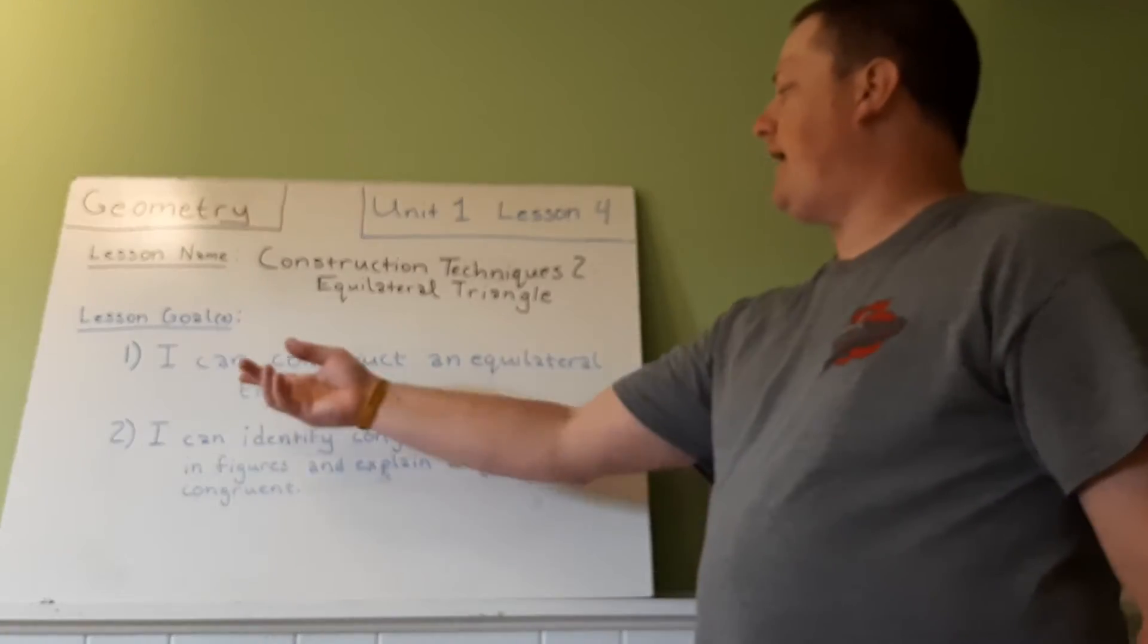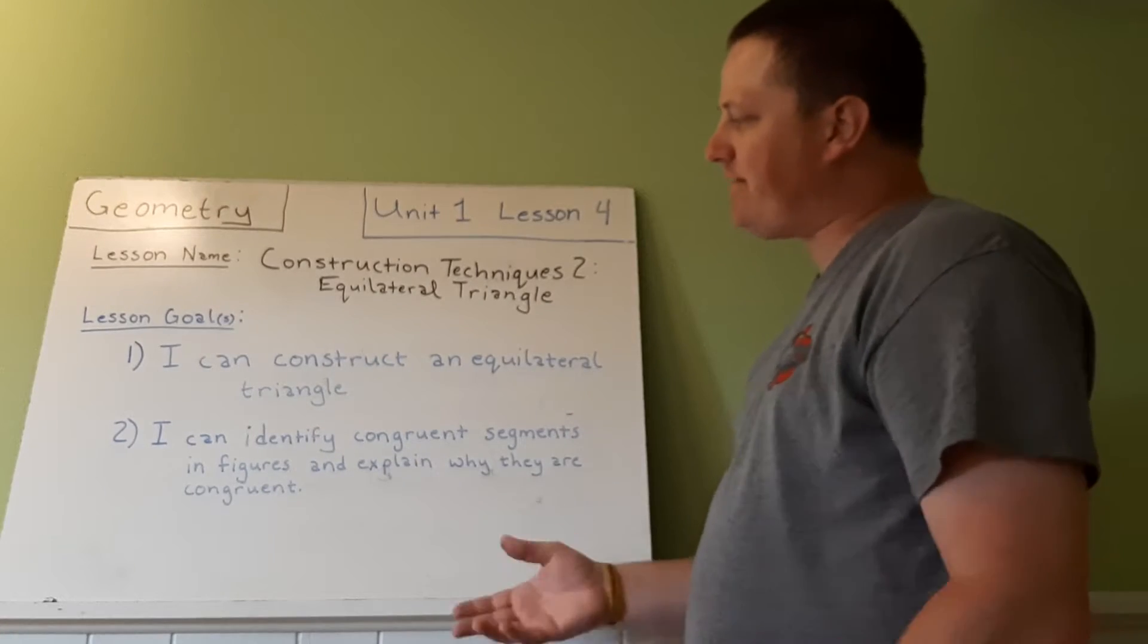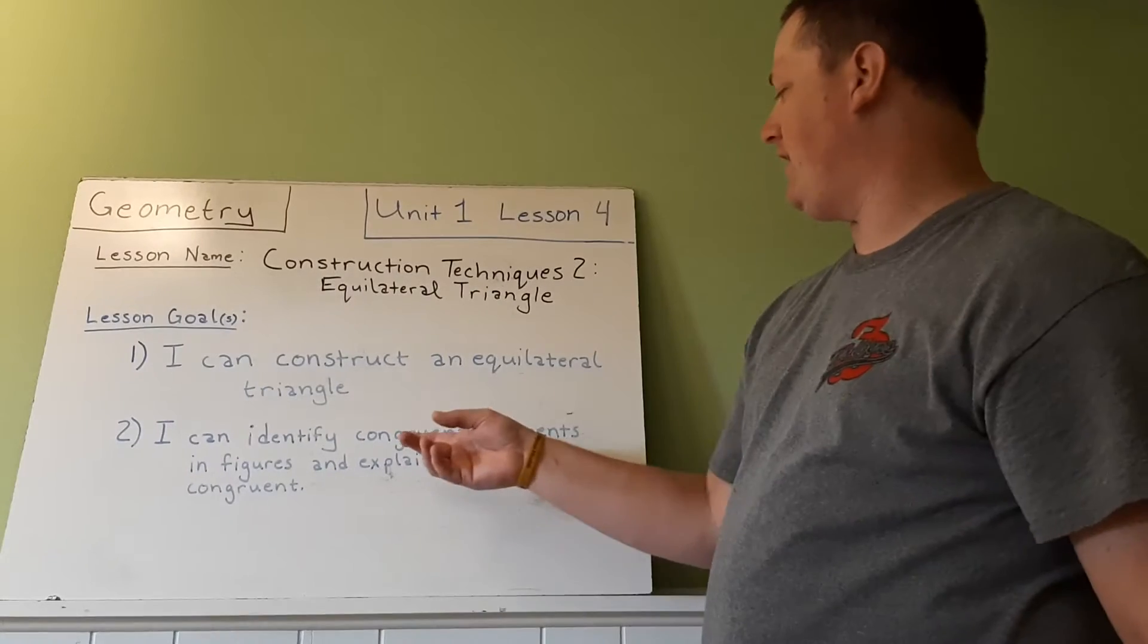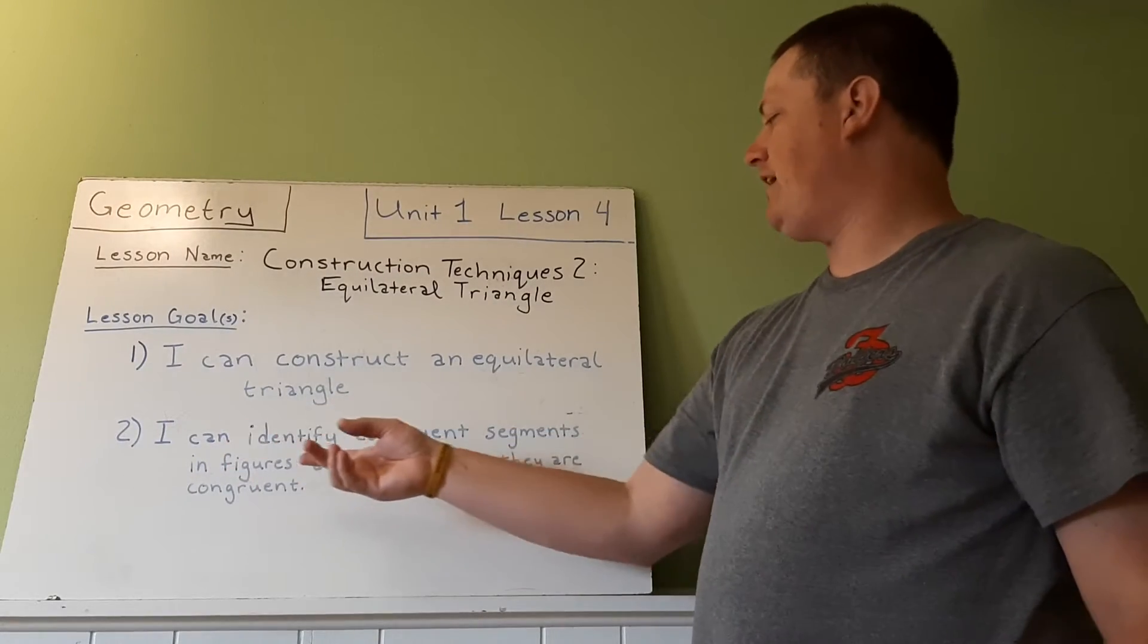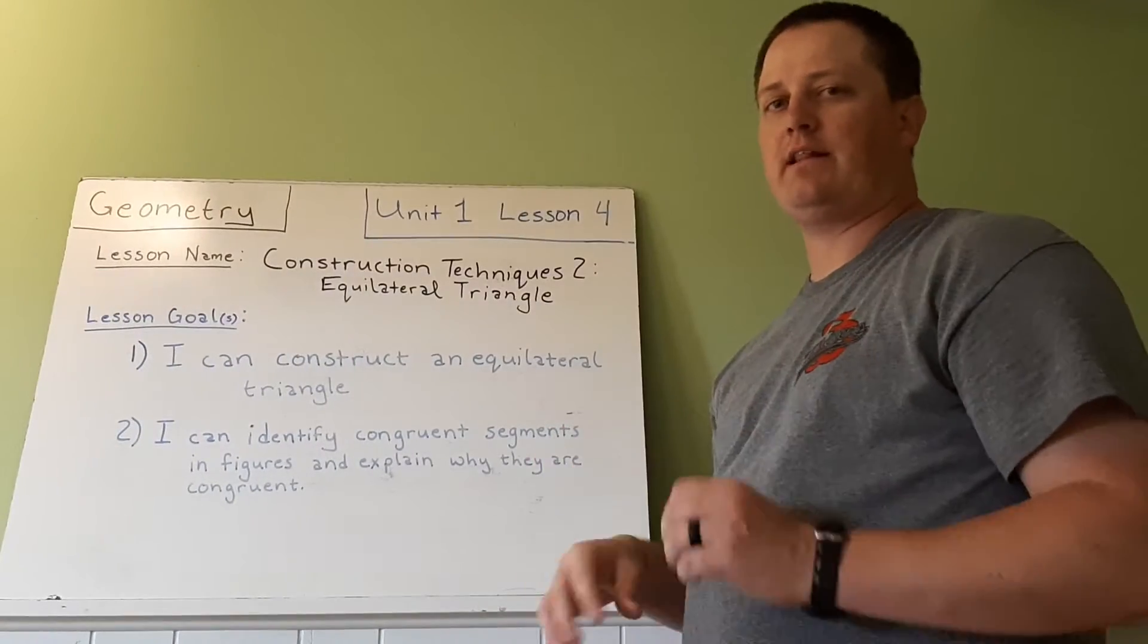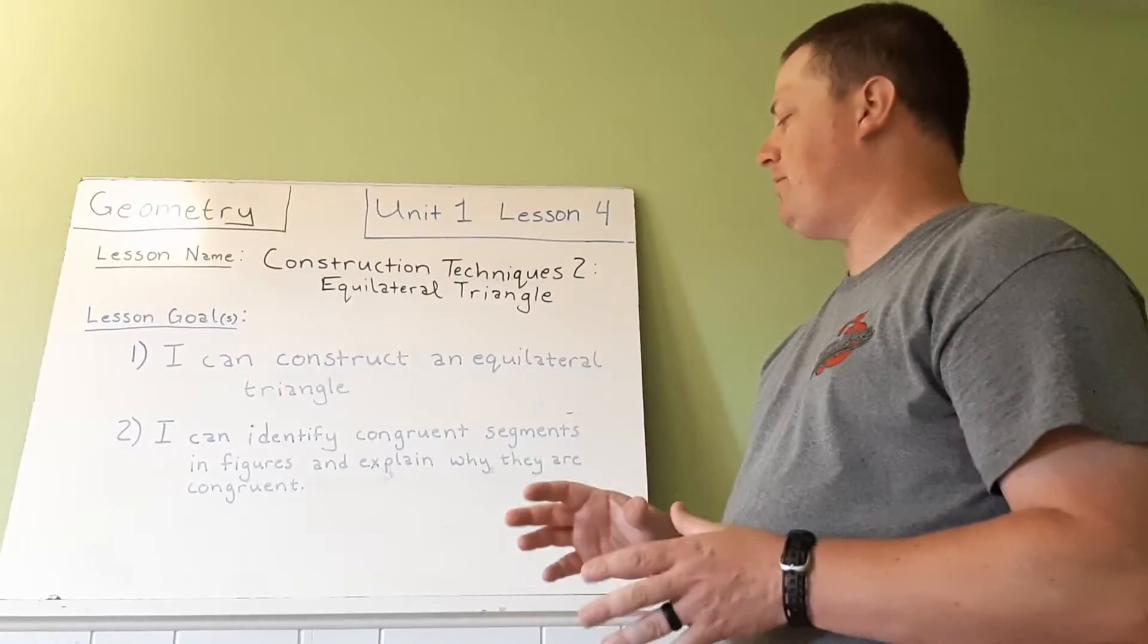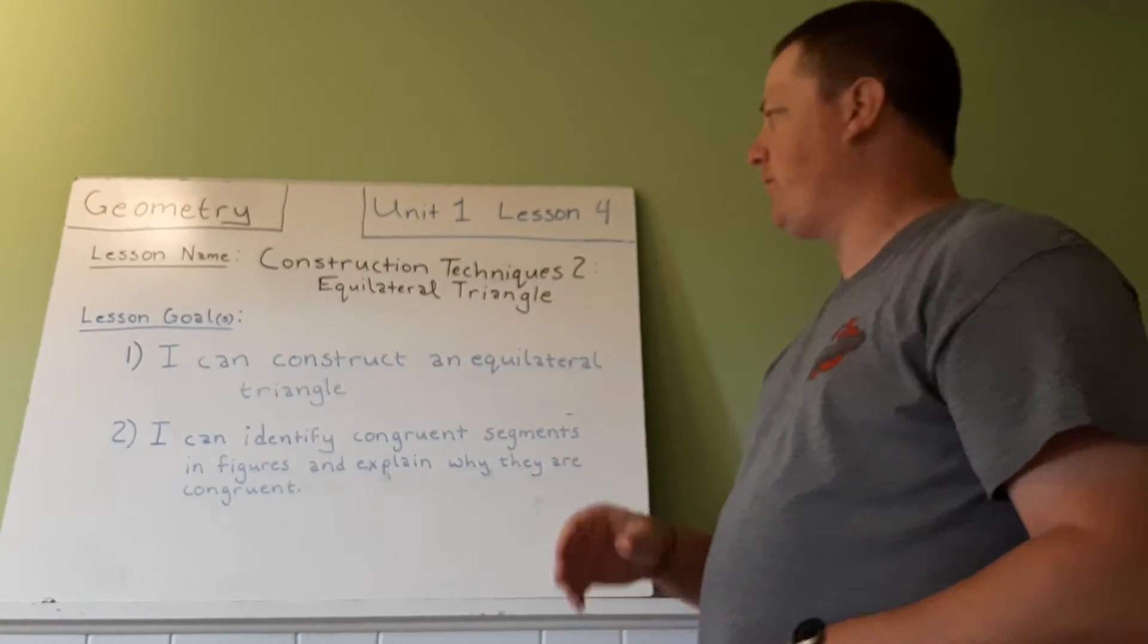Our lesson goals are: I can construct an equilateral triangle, and I can identify congruent segments in figures and explain why they are congruent. As we construct these things, we're going to have some congruent, equal parts, and we want to be able to explain why they're congruent.